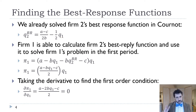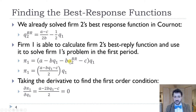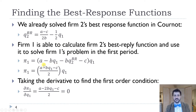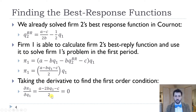Firm one says: that's how much firm two is going to produce. So firm one plugs firm two's best response function into its own profit function. Because Q1 appears in firm two's best response, firm one's profit is now expressed only in terms of Q1: π1 = [A − B·Q1 − C/2]·Q1. Taking the derivative, we get A − 2B·Q1 − C/2 = 0. The only difference between this and the monopoly first-order condition is the 2 in the denominator.